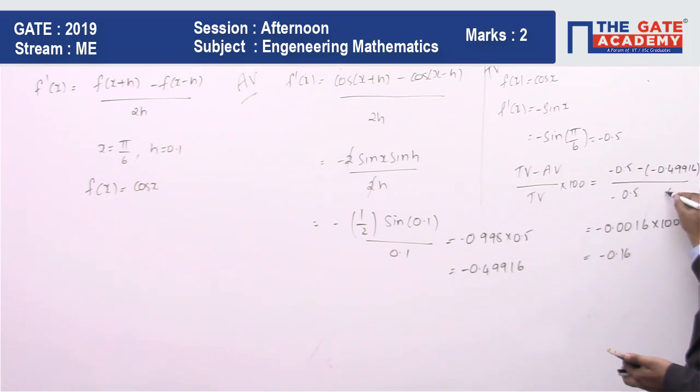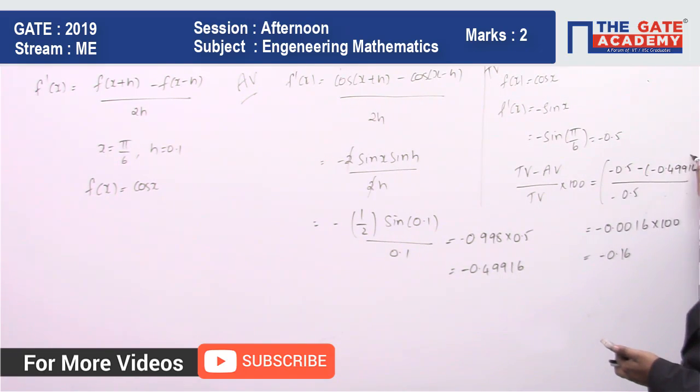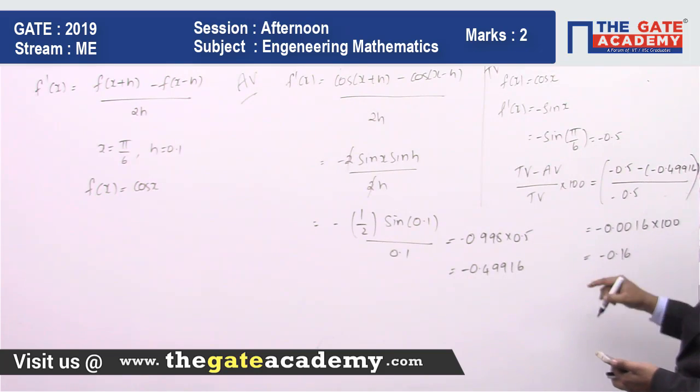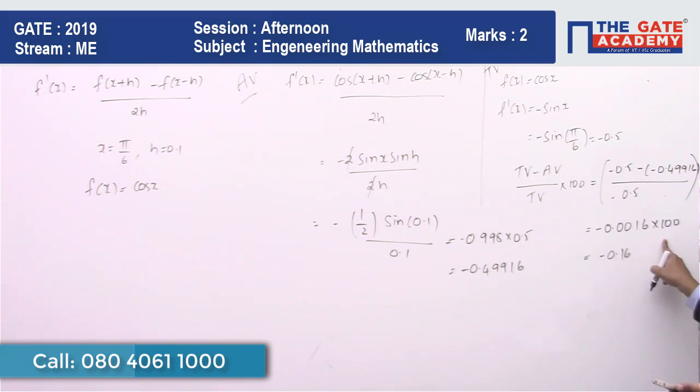So it is going to be -0.16%. Here multiplied by 100 is also there, right? This comes in the numerator. Whatever value you are finding out multiplied by 100, so this value comes to -0.0016 and then multiplied by 100 it's going to be -0.16%.